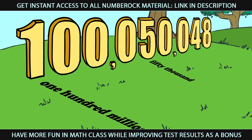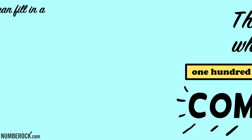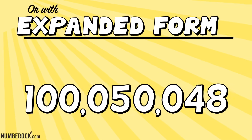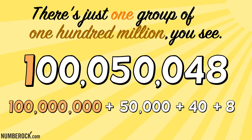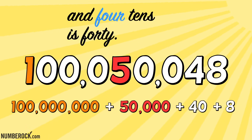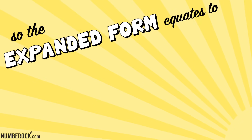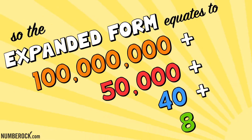One hundred million, fifty thousand, forty-eight. The word form is what we speak to communicate, and we can fill in a place value chart. We'll expand its form — break each place value apart. There's just one group of one hundred million. Five ten-thousands is fifty thousand, and four tens is forty. Eight ones makes eight, so the expanded form equates to one hundred million plus fifty thousand plus forty plus eight.